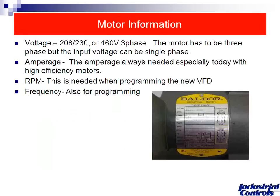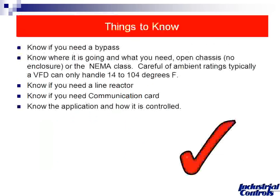Other nameplate information — RPM and frequency — isn't strictly needed for selection, but it's smart to write down as much as you can. RPM and frequency are great for programming. Many VFDs let you enter those values, so when you look at the screen you can see the actual RPM because you scaled it properly at the start. Get all nameplate information, and also pay attention to how it's wired — high or low voltage.